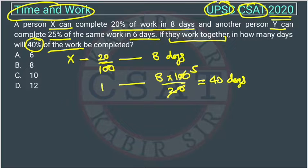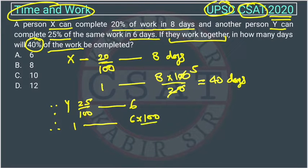Similarly for Y, right? Y completes how much work? 25% work in how many days? In 6 days. I am using just the unitary method. Then one work Y will complete in how many days? So it will be 25 by 100 actually, right?